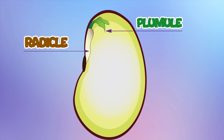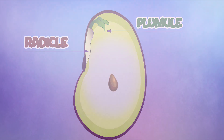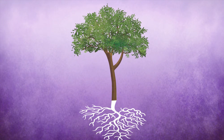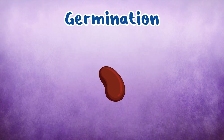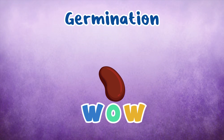The radicle turns into the root, and the plumule turns into the shoot. The journey of the seed to a full-grown tree is called germination. Seeds need WOW to germinate.